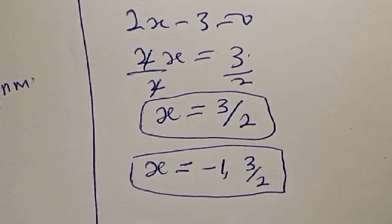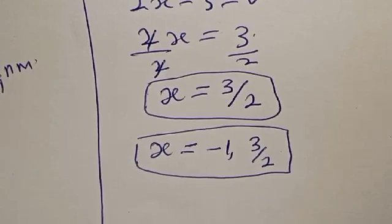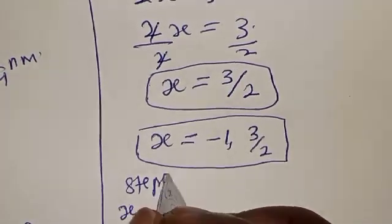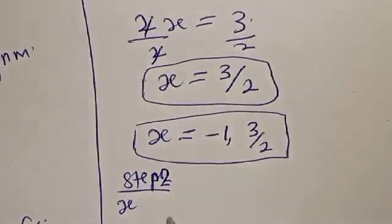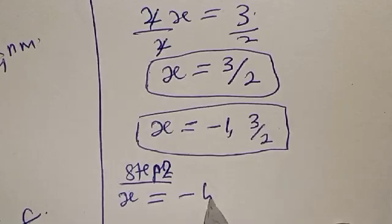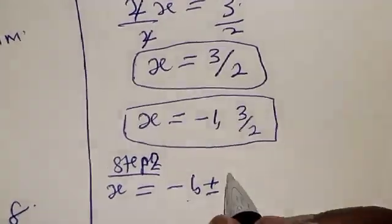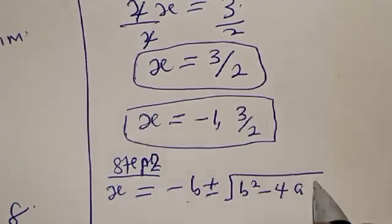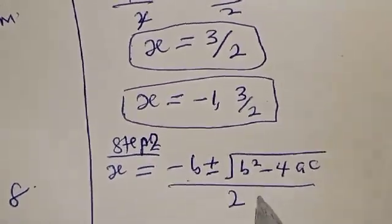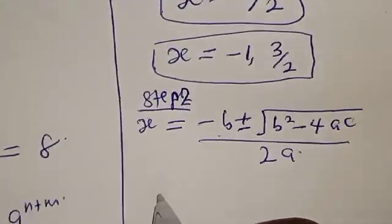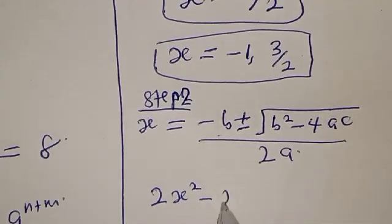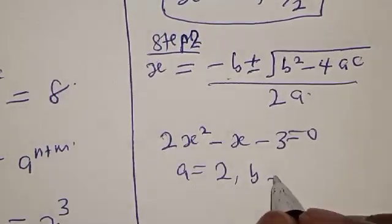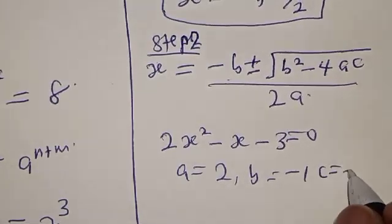The second method is to use the quadratic general formula to verify our answer. Step 2. We have s is equal to minus b plus or minus square root of b squared minus 4ac, all over 2a. The equation is 2s squared minus s minus 3 equal to 0. Therefore, a equals 2, b equals minus 1, and c equals minus 3.